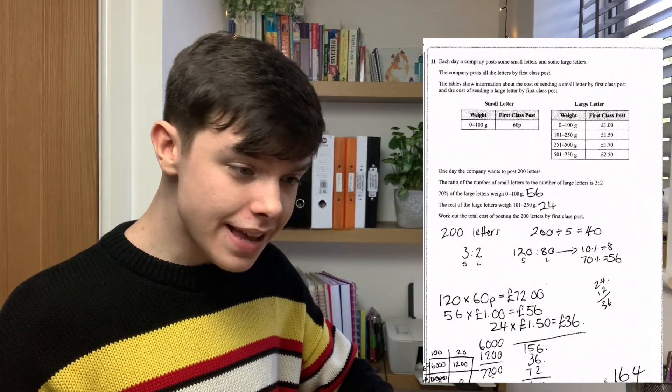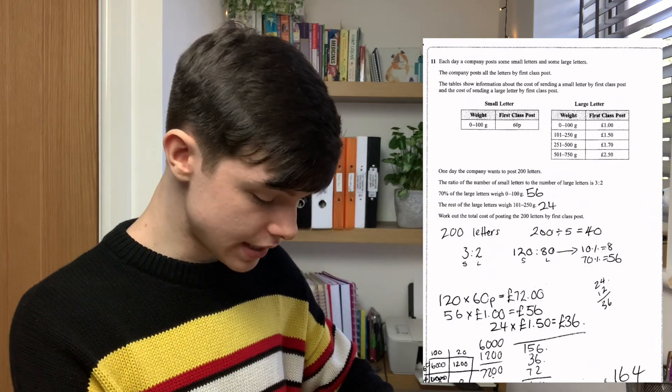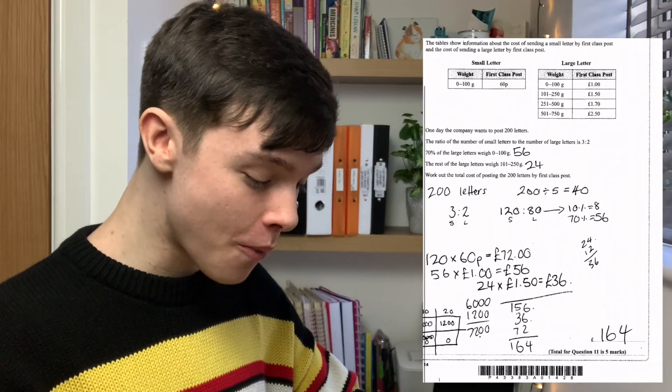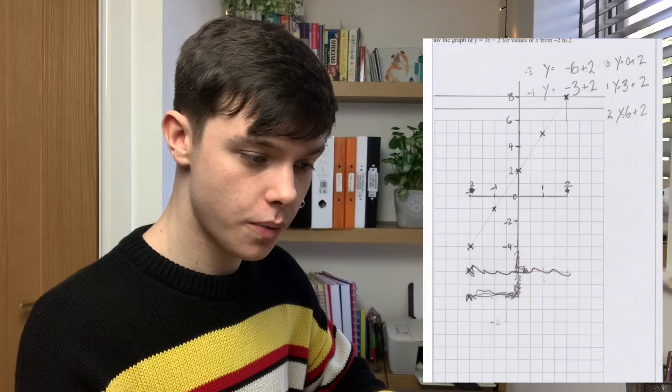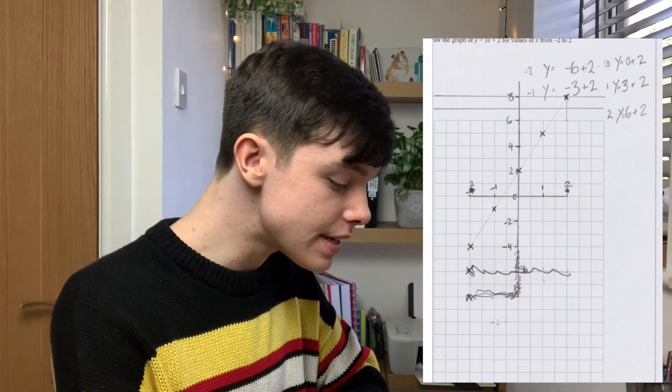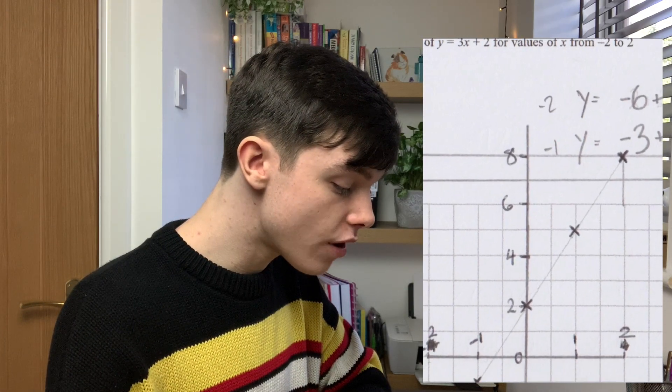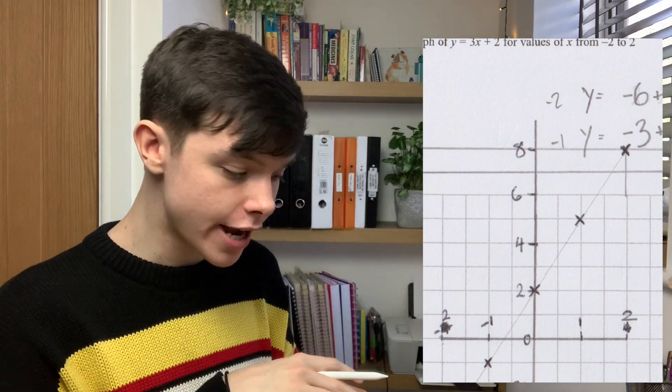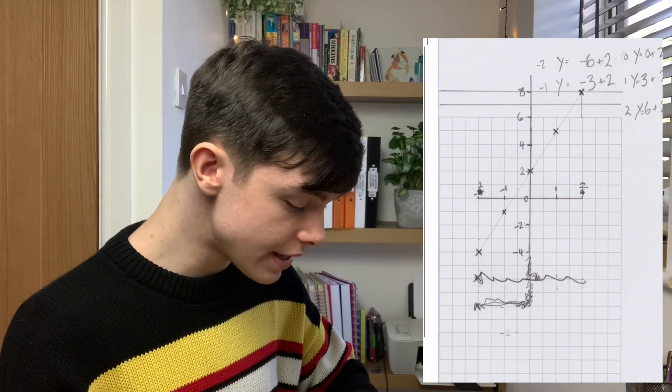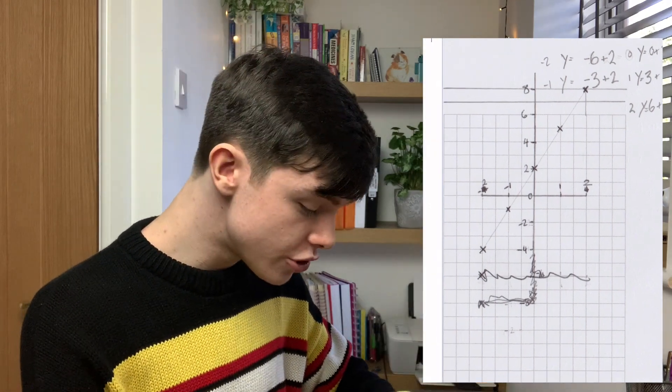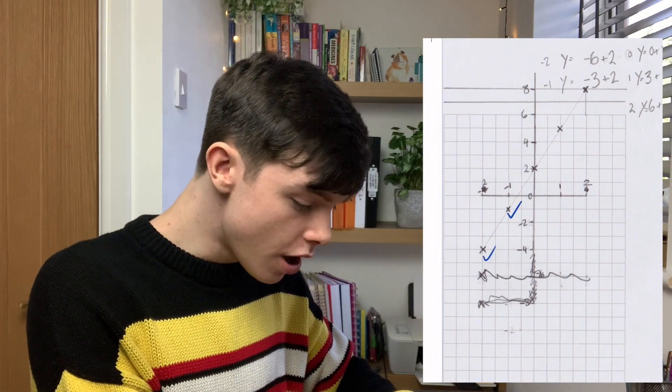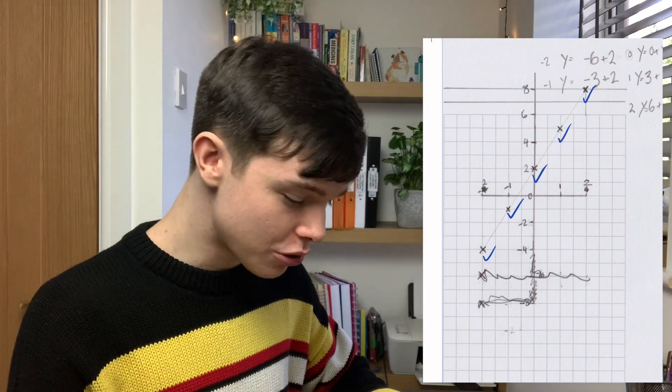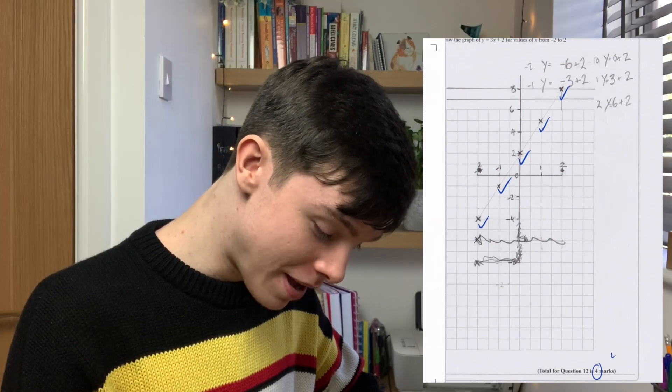Question eleven. Let's see whether we've got that one right. The answer is 164. Rosie put 164. It is going well. Five marks. Question twelve said, draw the graph of y equals 3x plus 2 for values of x from minus 2 to 2. That is all correct. So we get four marks.